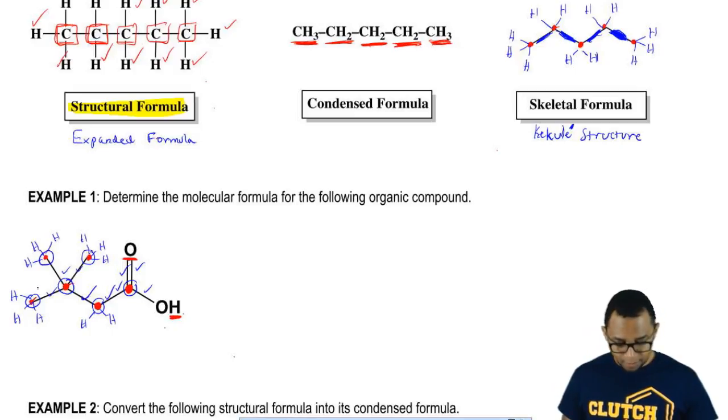Let's count how many total carbons we have. We have one, two, three, four, five, six carbons, so C6.